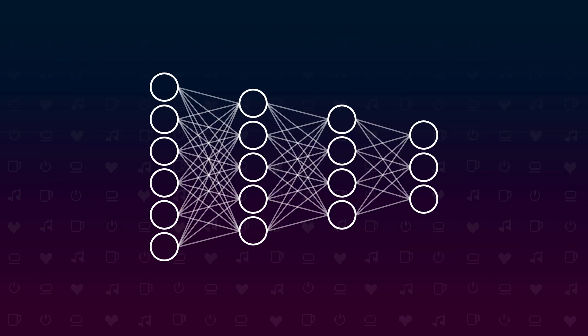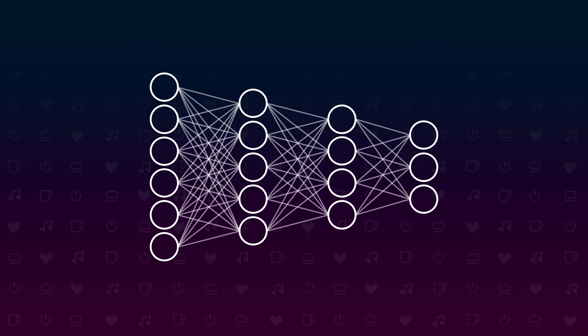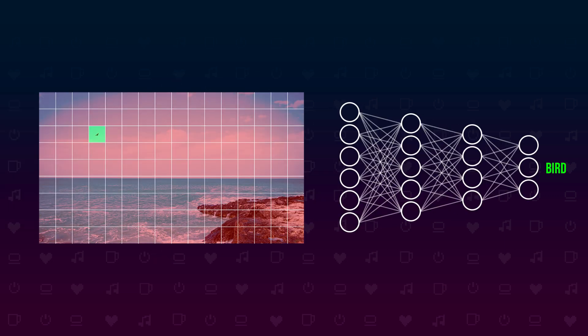On a side note, normally there would be one input neuron per segment of the feature map here but this wouldn't fit on the screen. The neural network uses the features to conclude that there is a bird in the image. So essentially we have two parts: the seeing part, or the eyes of the neural network, and the brain making the conclusions.